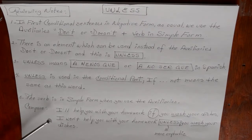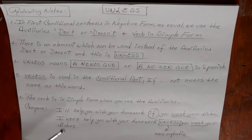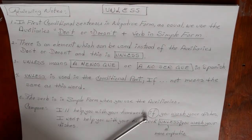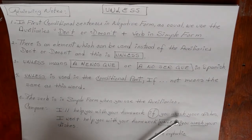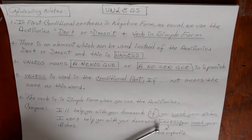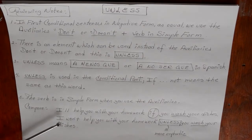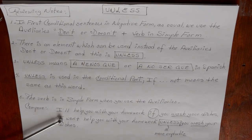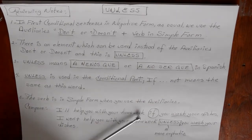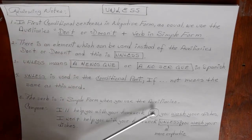Let's compare this structure. 'I will help you with your homework if you wash your dishes.' Here we start with 'will', then 'if' is the conditional part, and the verb after the subject is 'wash'. Now: 'I won't help you with your homework unless you wash your dishes.' The purpose of using 'unless' is to make the sentence more emphatic. The first part is in negative, and then we introduce 'unless' instead of using 'if I don't', 'if you don't', or 'if he doesn't'.